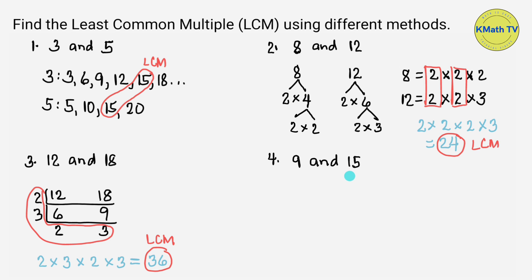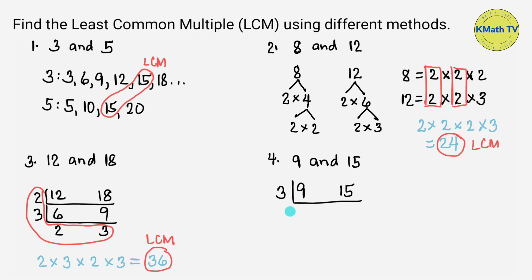Last example: let's find the LCM of 9 and 15 using continuous division. 9 and 15 — what prime number can divide both? They are divisible by 3. 9 divided by 3 equals 3, and 15 divided by 3 equals 5. 3 and 5 are both prime numbers.